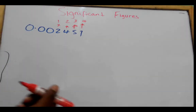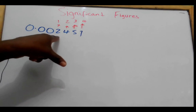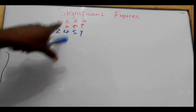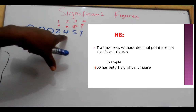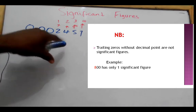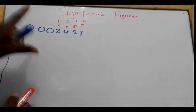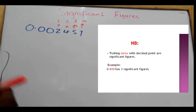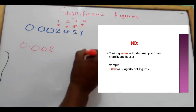What if you were asked to write this correct to one significant figure? Since we know that the first significant figure is 2, we must look at the second significant figure. If this number is 5 or more, we fling away this number and add 1. Since this number is less than 5, it does not affect this 2. So we can write 0.002, and this would be one significant figure.